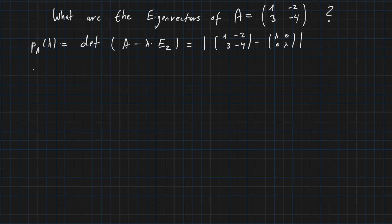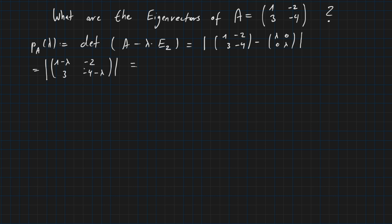So this gives us the determinant of the matrix: 1 minus lambda, minus 2, 3, minus 4 minus lambda. We need to calculate the determinant of this 2×2 matrix. There is a formula to do so: take the product of the first and last entry and subtract from it the product of the remaining two entries.